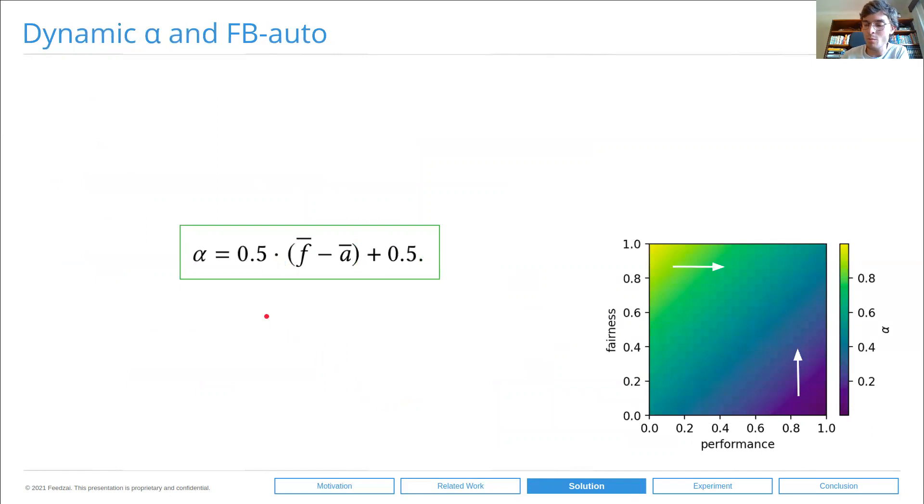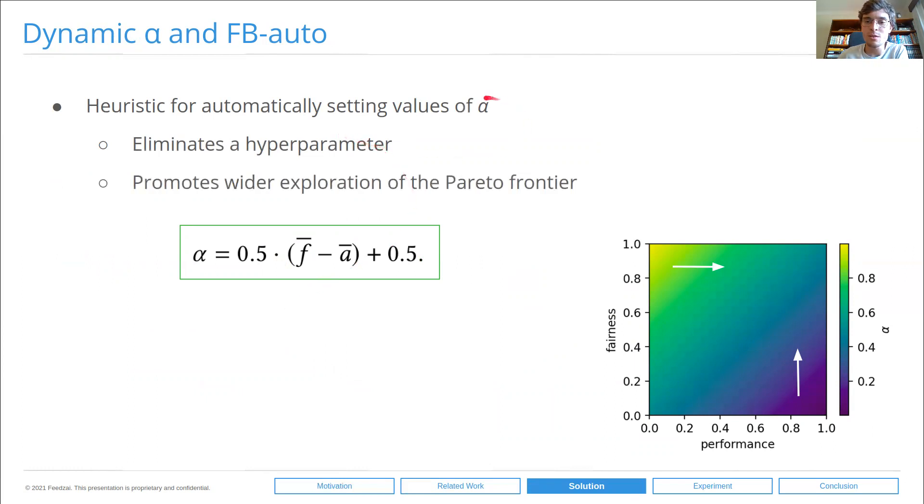Additionally, aiming for a completely out-of-the-box experiment experience, we're also proposing a heuristic for automatically setting these values of alpha. Our objectives are twofold. Alpha is the relative importance of performance in our optimization metric. If we use a static value of alpha, we'll be targeting a specific trade-off between fairness and accuracy, which is all right. But our objectives are twofold when proposing this heuristic: first of all, we're eliminating a hyperparameter from our hyperparameter tuner. And secondly, we aim to promote the wider exploration of the Pareto frontier instead of targeting a single trade-off.